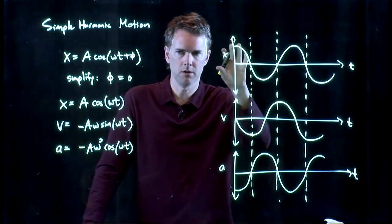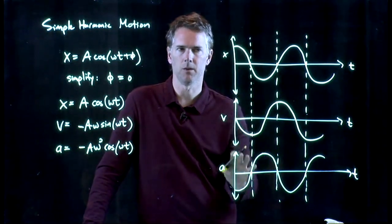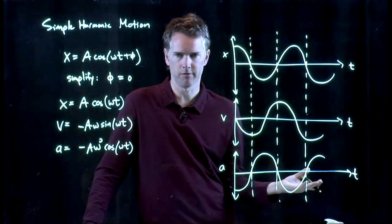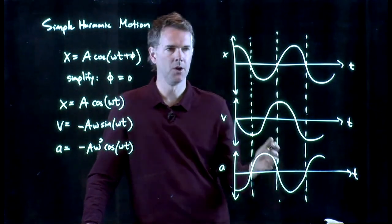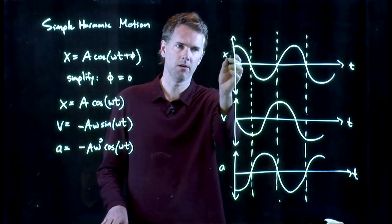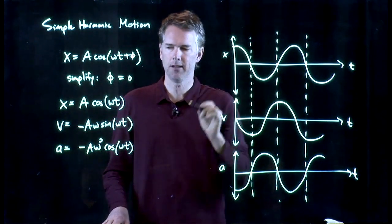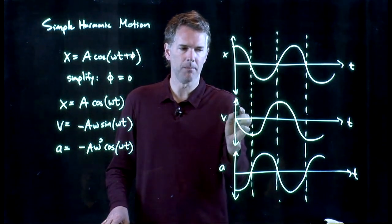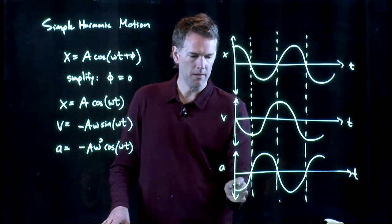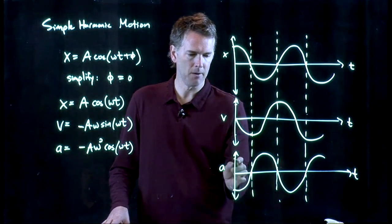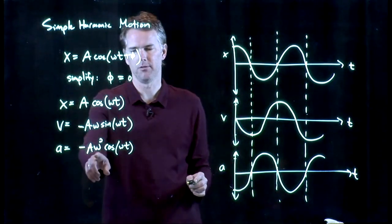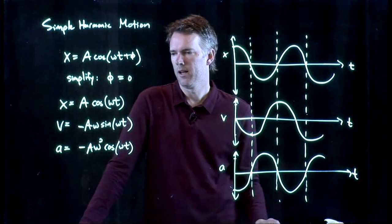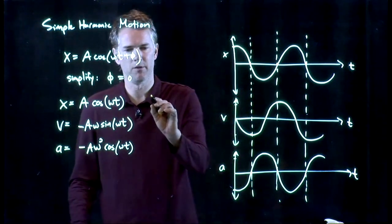And this is what the position, the velocity, and the acceleration look like as a function of time. And you know what these values are here. It goes up to a, goes down to negative a. This one goes from negative a omega up to positive a omega. And this one goes from negative a omega squared to positive a omega squared. It's just what's ever in the front of those things.